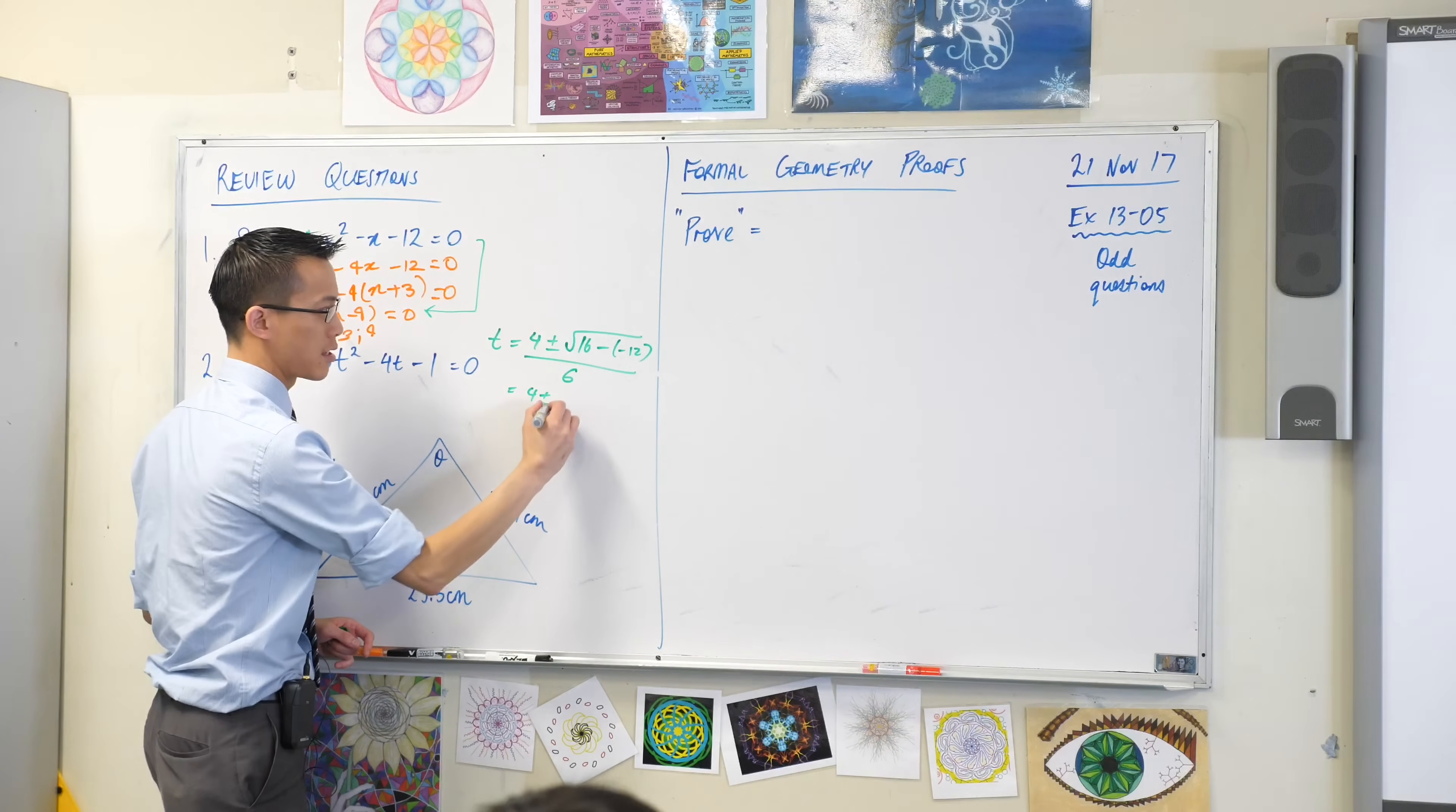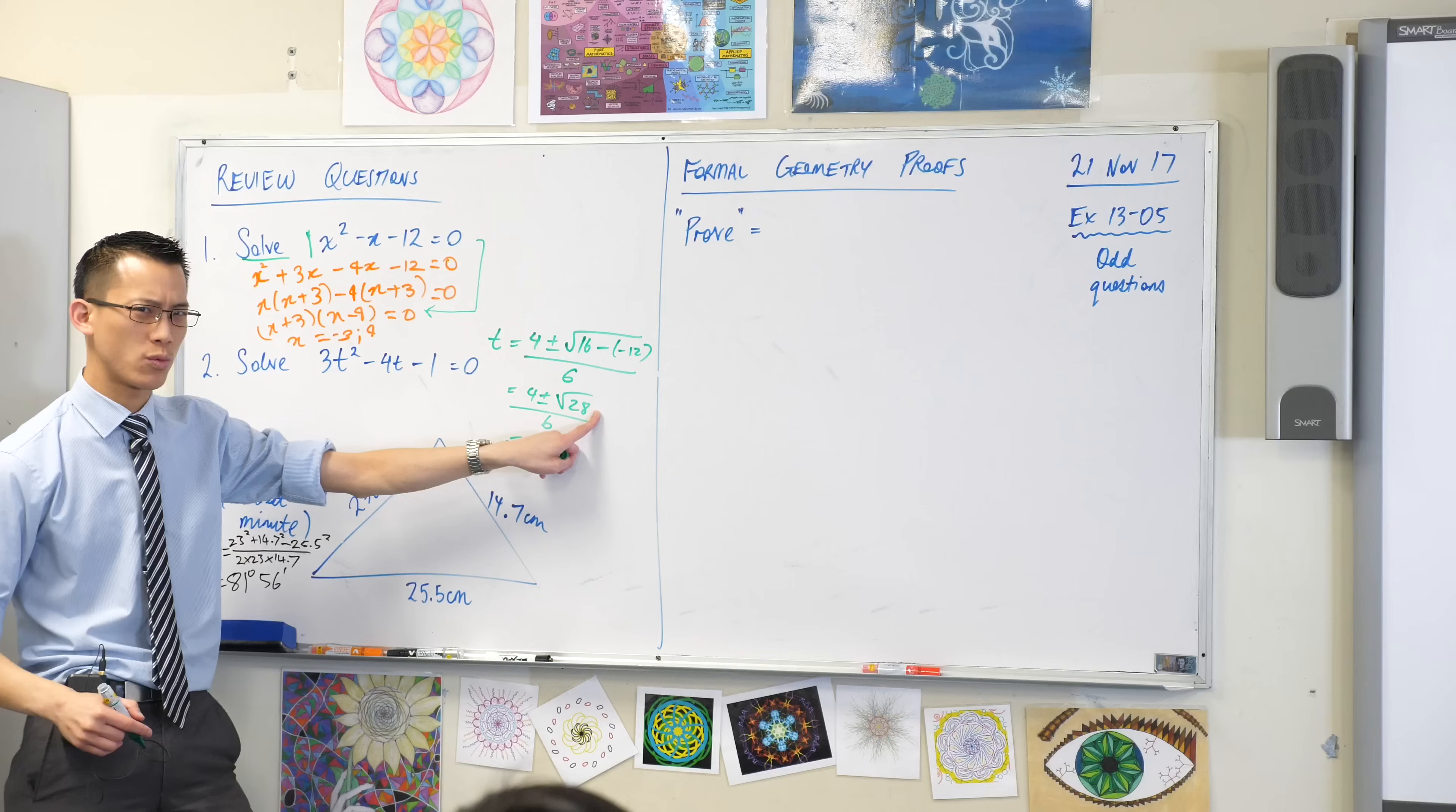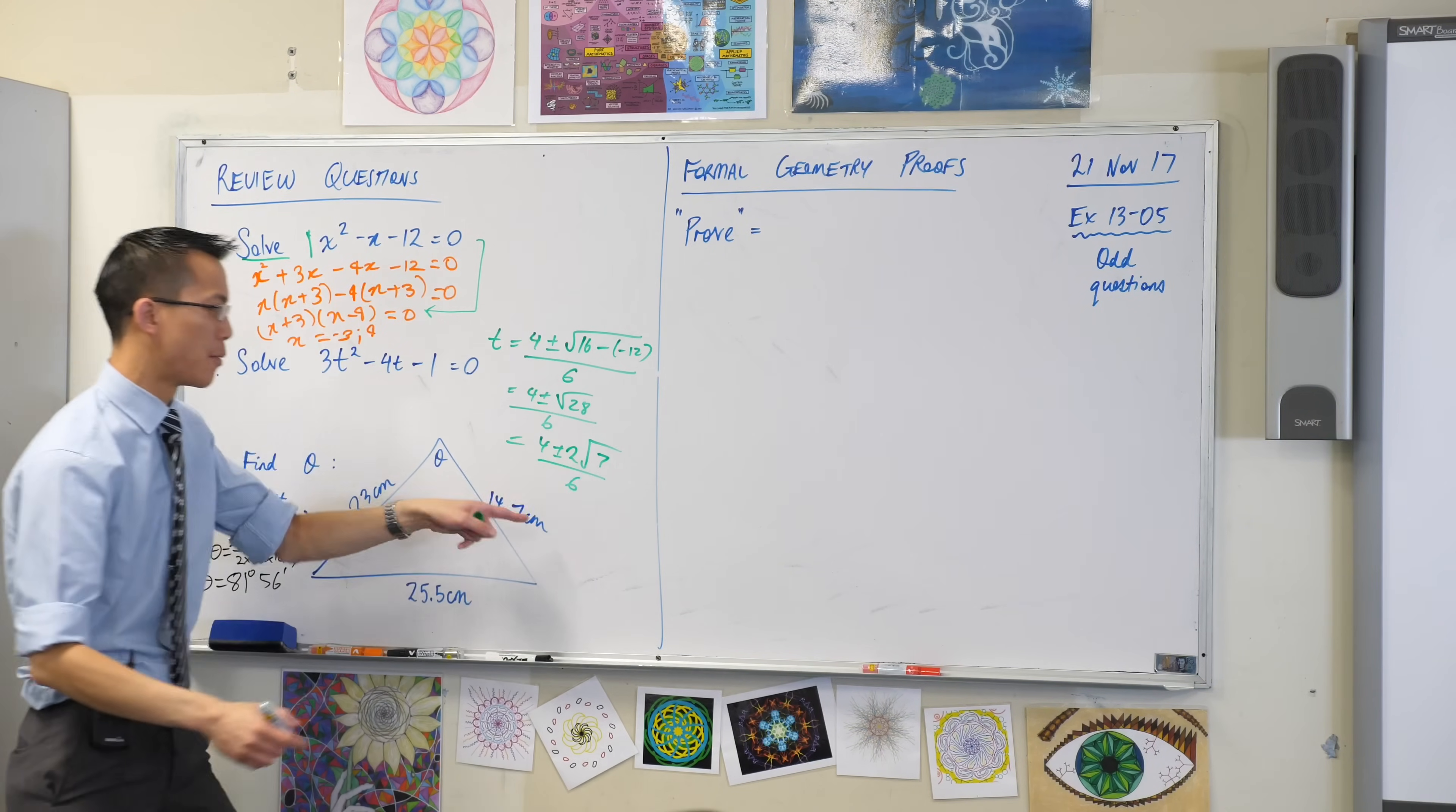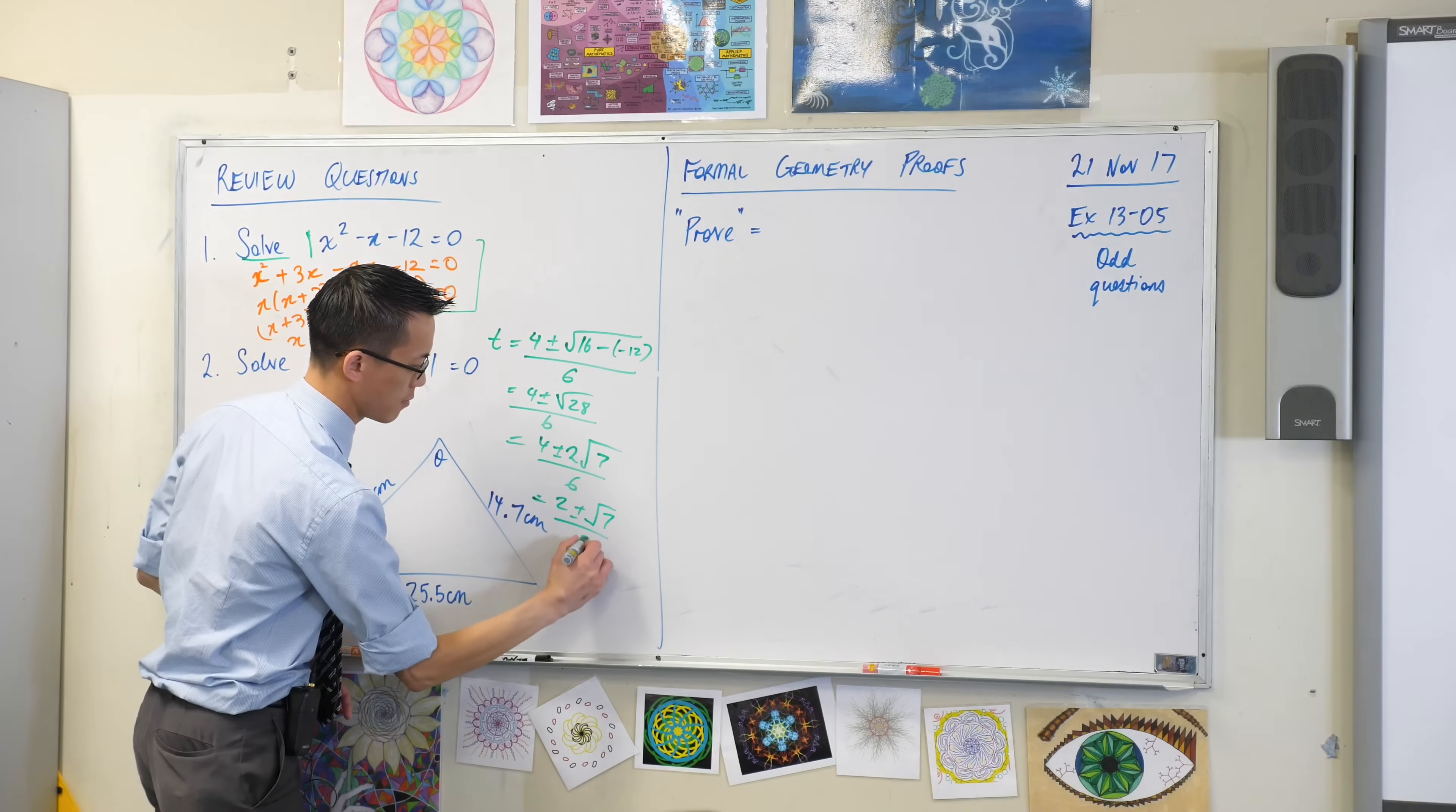Now I can work with this thing underneath the square root. 16 take away negative 12 is 28. Very good. On 6. And I can tidy this up a little bit. See this square root of 28. There's a square number I can get out. What's the square number? 4. So if I take it out, the square root of 4 of course is 2, which leaves me with the square root of 7. Which means I can, I'm not even going to bother writing it, but I could write that as 2 plus or minus root 7 on 3. Does that make sense? Maybe I will write it just for the sake of it.